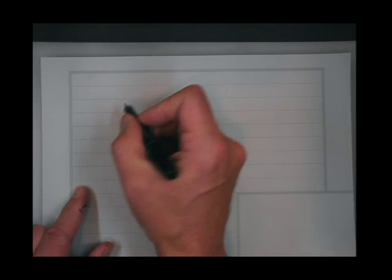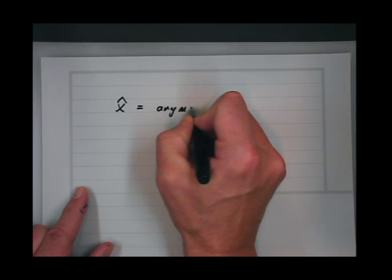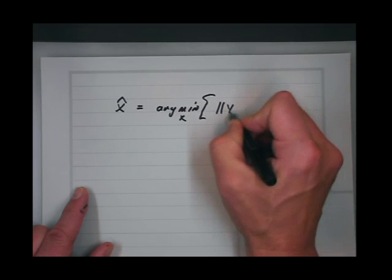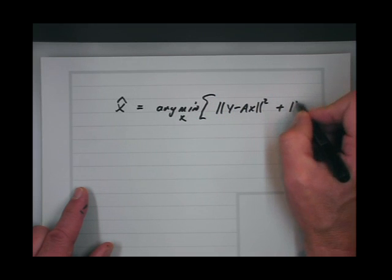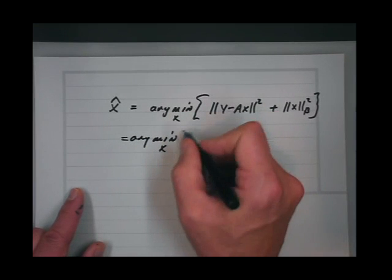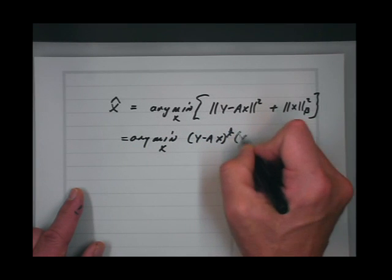The MAP estimate is the value of x that minimizes the sum of the norm of y minus Ax squared plus the norm of x squared, where B is a matrix. More explicitly: arg min over x of (y minus Ax)-transpose times (y minus Ax) plus x-transpose B x.